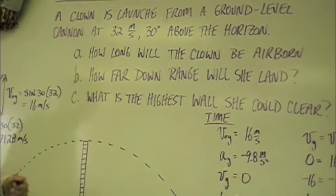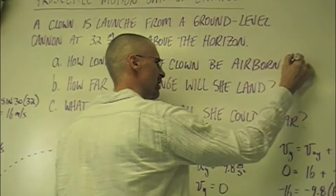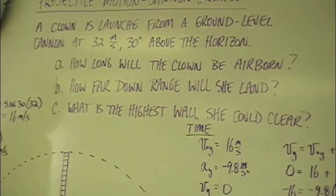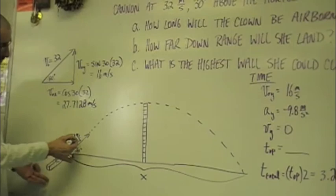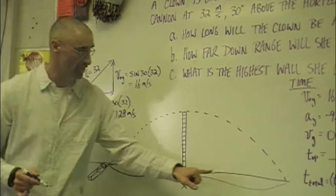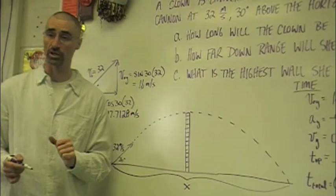How long will the clown be airborne? How far down range will she land? I made it a girl clown. And what is the highest wall she could clear? So if we look at the example, here's the clown. Let's give it some hair. We're going to shoot her out. She's going to fly through the air and she's going to land somewhere. How far down range? How long in the air? And what's the highest wall that she can make it over? Does that kind of make sense?